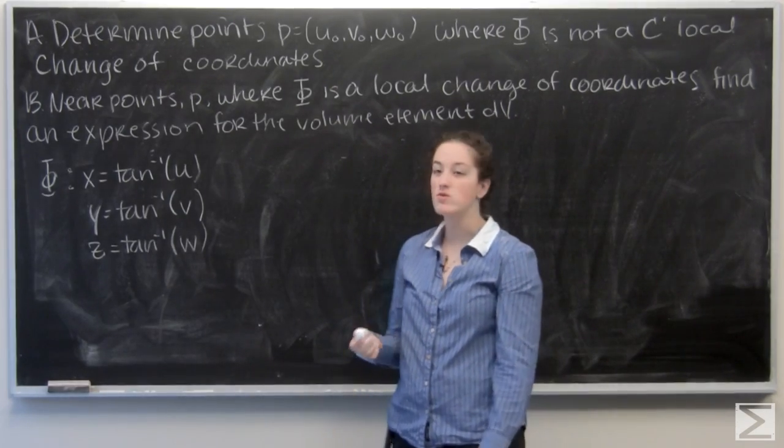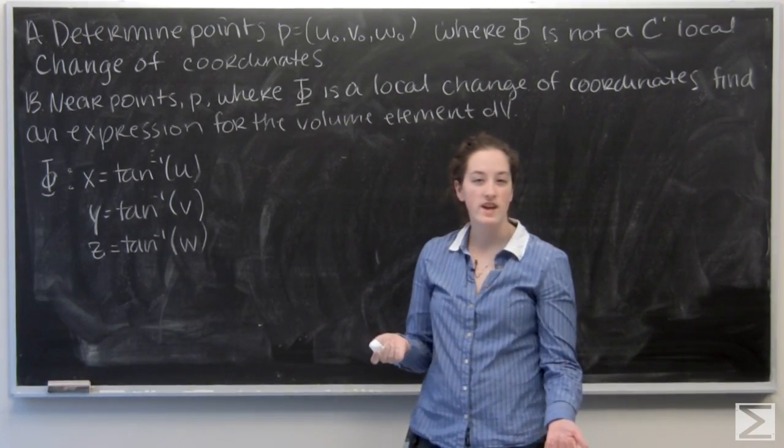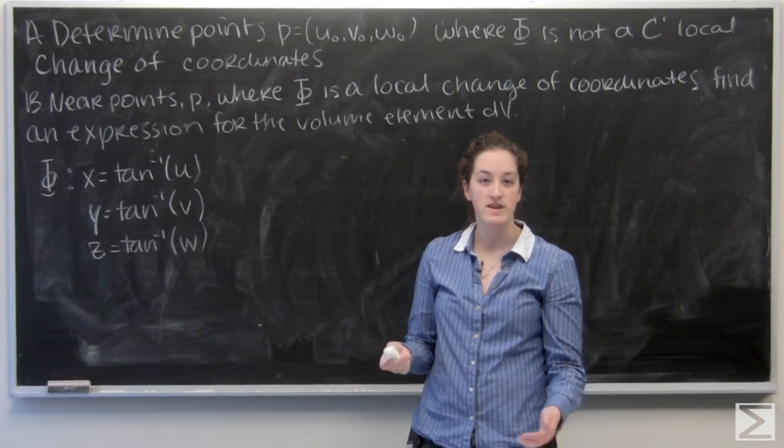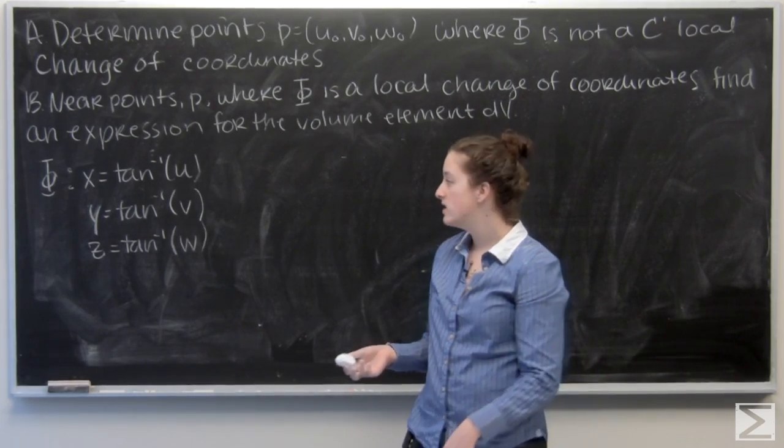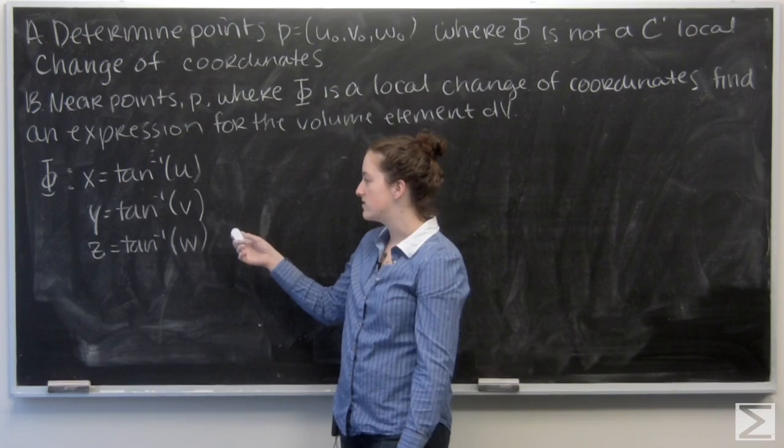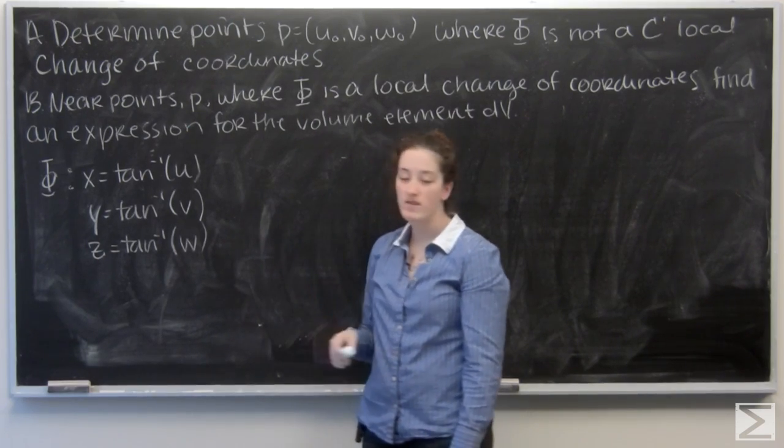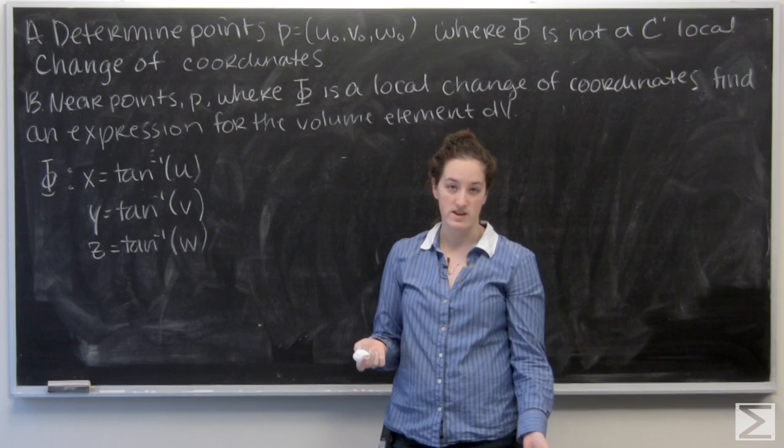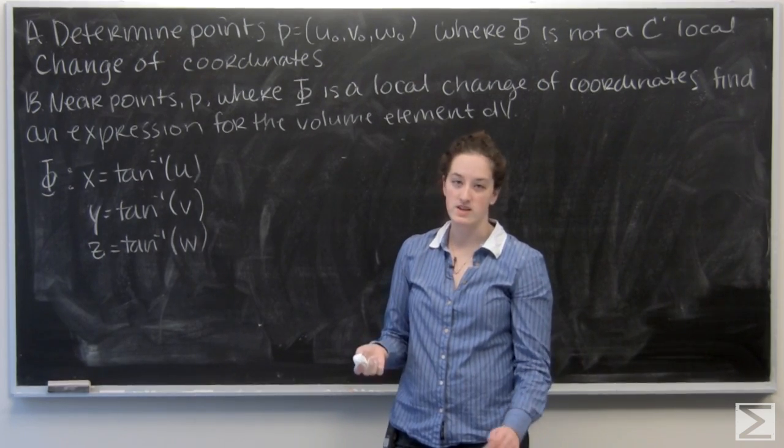In this problem we're looking at local coordinate changes. That's a lot like how we converted from x, y, and z to spherical coordinates. But here we're given a different set of changes. So we have x equals arctan u, y equals arctan v, and z equals arctan w.